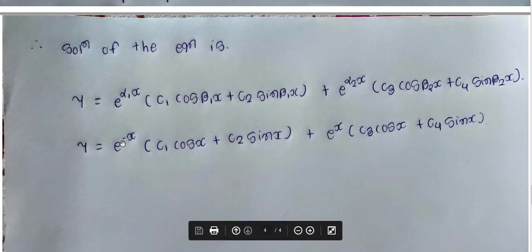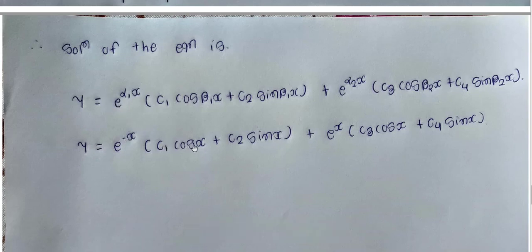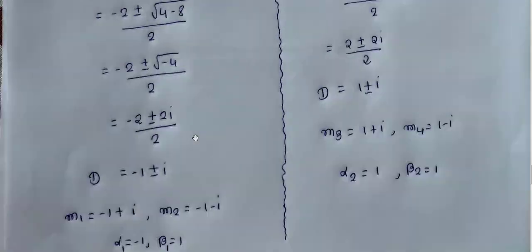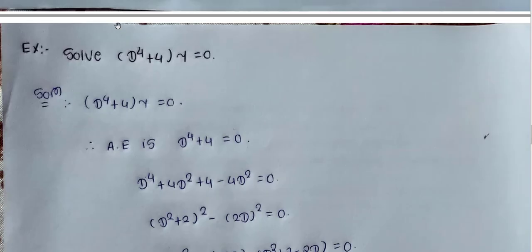The solution is y = e^(α1·x)[c1·cos(β1·x) + c2·sin(β1·x)] + e^(α2·x)[c3·cos(β2·x) + c4·sin(β2·x)]. Substituting α1=-1, β1=1, α2=1, β2=1: y = e^(-x)[c1·cos(x) + c2·sin(x)] + e^x[c3·cos(x) + c4·sin(x)]. This is the final solution. Clear? Thank you.